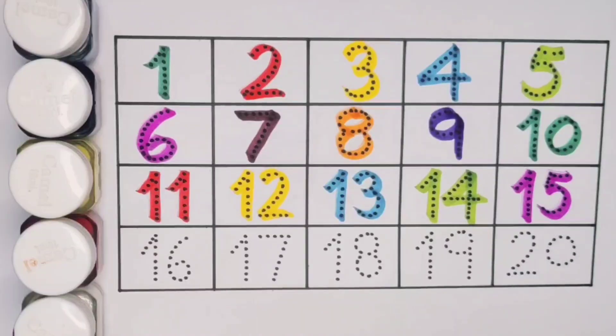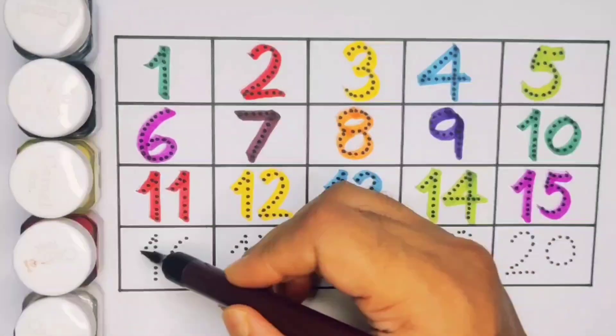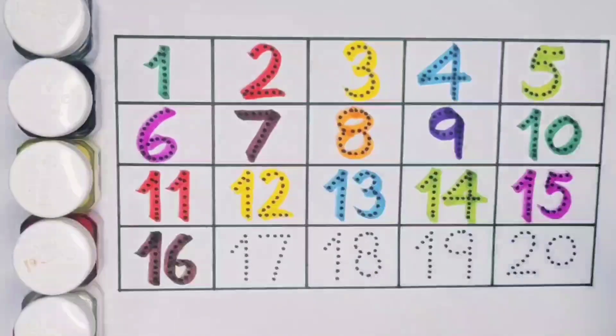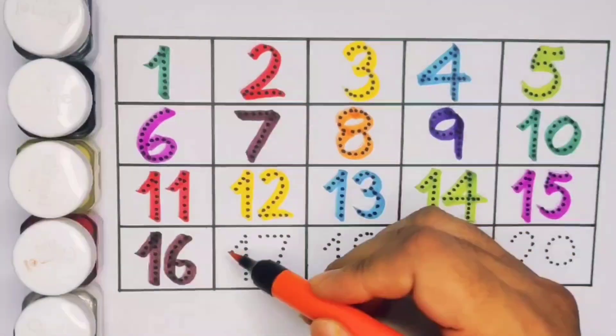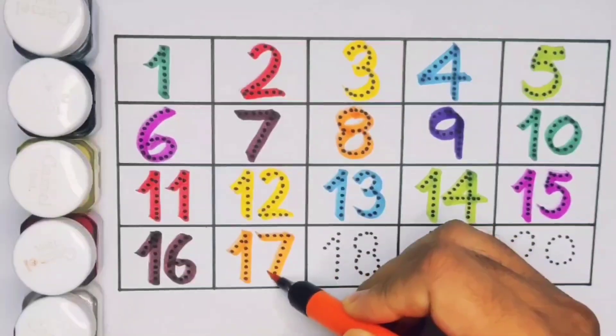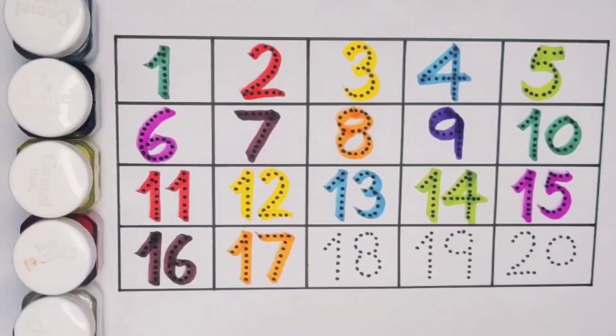Next kids 16, 1, 6, 16, number 16. Next kids 17, 1, 7, 17, number 17.